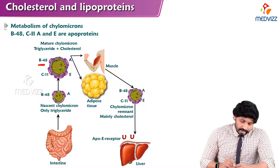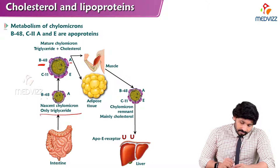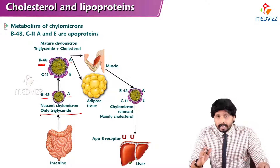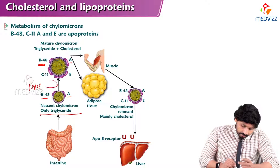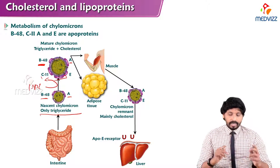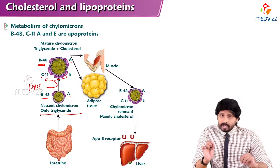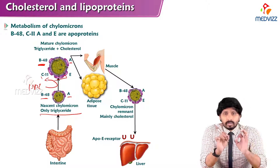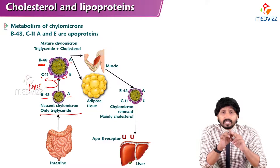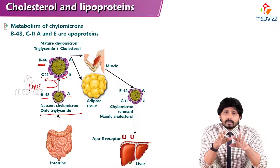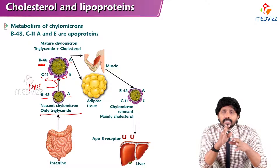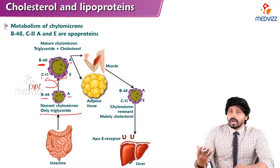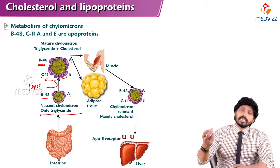When chylomicron is being synthesized in the intestine, ApoB48 and ApoA are already present — this is the nascent chylomicron, meaning it contains only B48 and A. Initially when synthesizing from the intestine it carries only two proteins, ApoB48 and ApoA. Then HDL comes into action in the circulation and donates ApoC2 and ApoE. ApoC2 is involved in activation of lipoprotein lipase, which is present in the endothelial lining of skeletal muscles, adipose tissue, and cardiac muscles. Once lipoprotein lipase is activated, it starts degrading the triglycerides present inside the chylomicron.